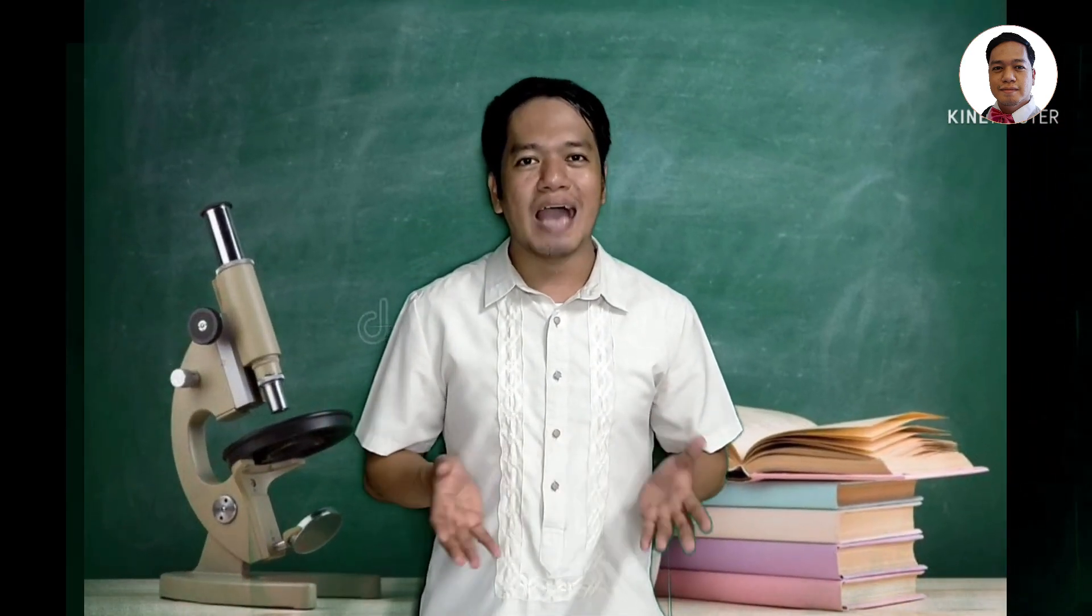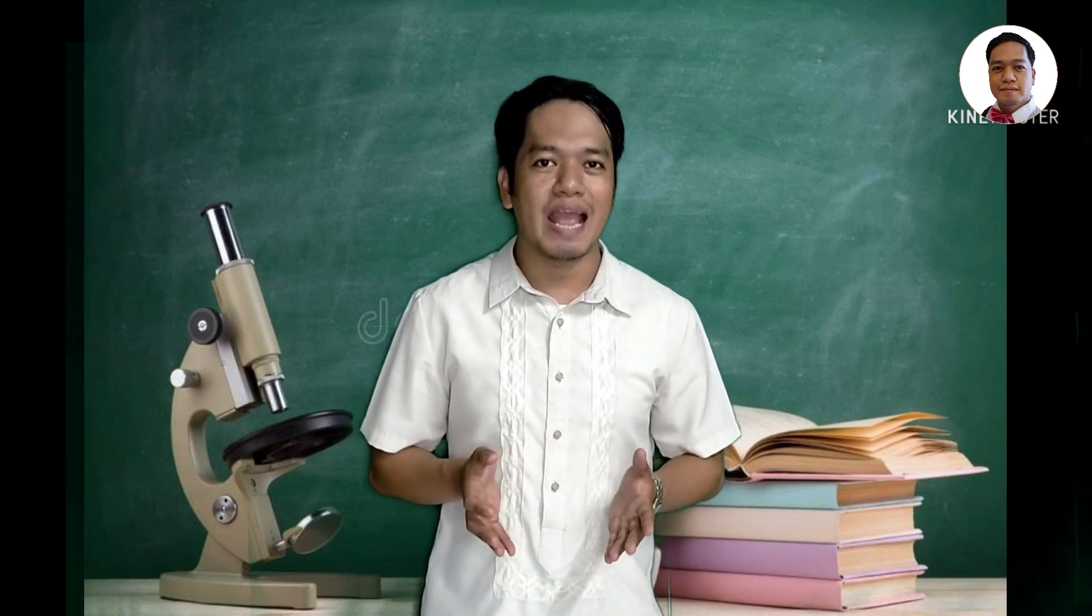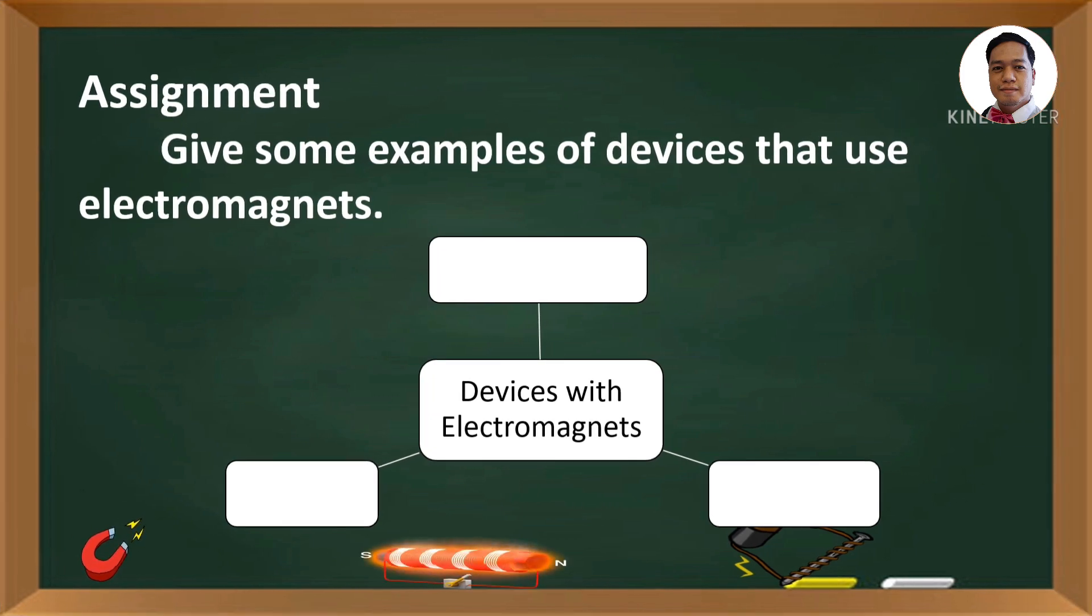For our assignment, answer this activity. Answer the concept map by giving some examples of devices that use electromagnets. Copy this concept map in your notebook.